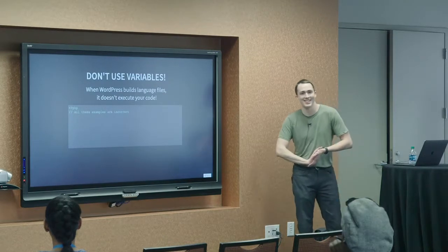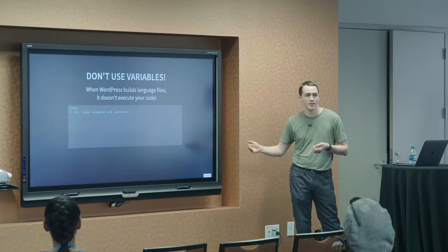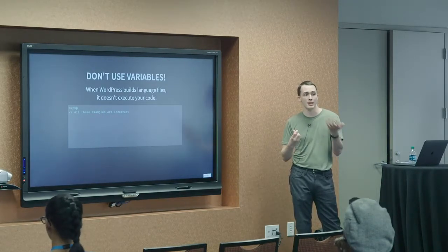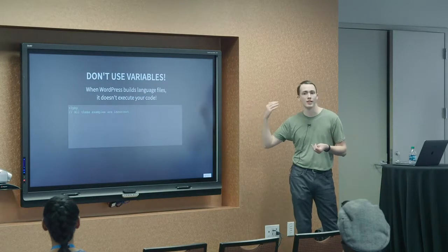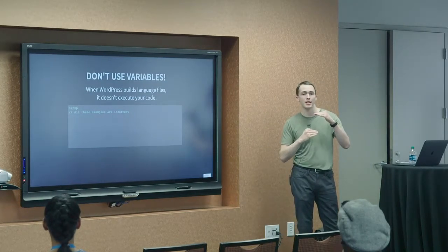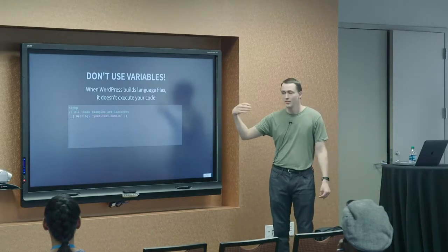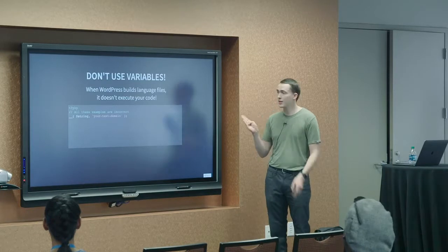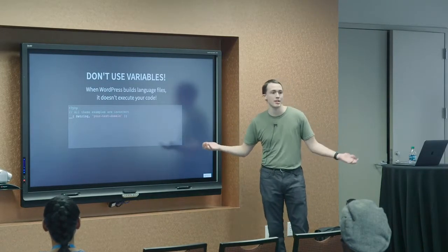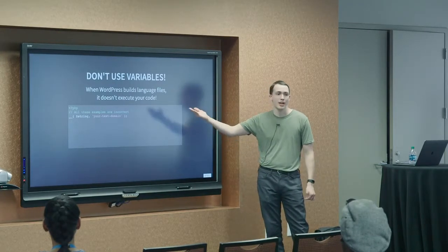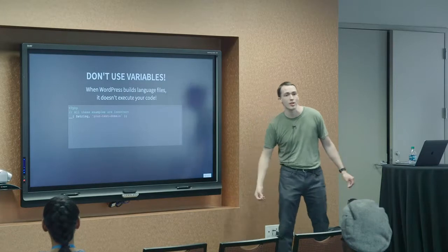Now we get to the fun part. The things that people do wrong when internationalizing code. So, when WordPress goes through all of your code and goes through all of its translation functions, when you're actually putting together files that can then be translated, it does not execute the code. The code is only executed when the website is actually loaded, when it's running. It does not execute when you're building a list of strings that need to be translated. So, if you do something like this where your text that needs to be translated is in a variable, WordPress will look at that. The translator, what they will see is they will actually just literally see dollar sign string as what needs to be translated.